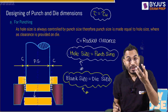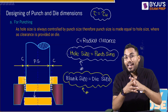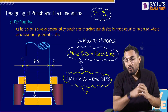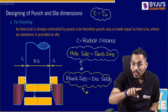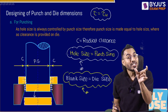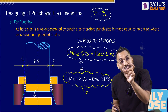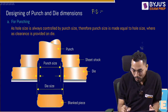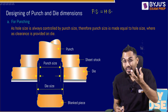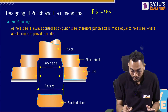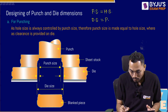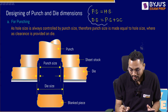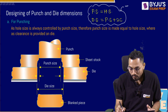There are two operations: punching, in which the hole is important, and blanking, in which the blank is important. In punching operation, since the hole is important and hole size is controlled by punch size, the punch is made exactly equal to the hole size. Once the punch size is designed, the die size is determined by adding the clearance: die size = punch size + 2C. These formulas are designed for circular blanks or circular holes.